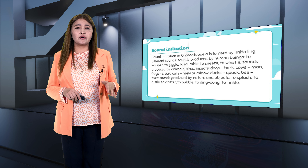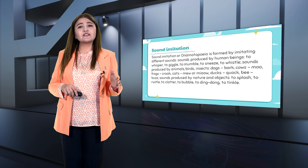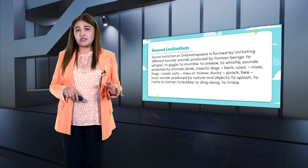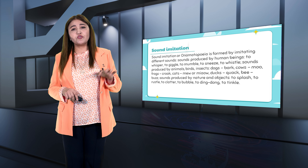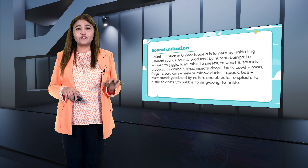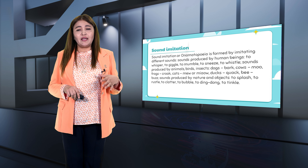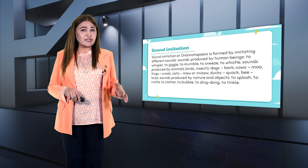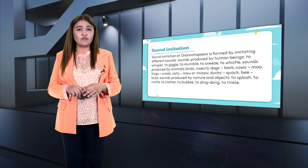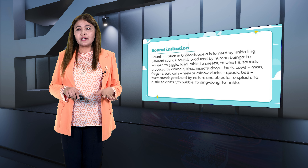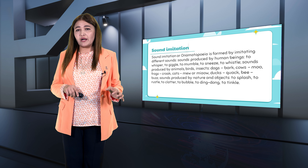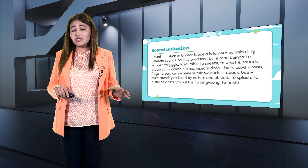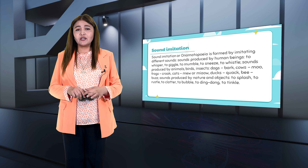Sound imitation or onomatopoeia is formed by imitating different sounds. Sounds produced by human beings include: to whisper, to giggle, to mumble, to sneeze, to whistle. Sounds produced by animals, birds and insects include: ducks quack, dogs bark, cows moo, frogs croak, cats meow, bees buzz. Sounds produced by nature and objects include: to splash, to rustle, to clatter, to bubble, to ding-dong, to tinkle.